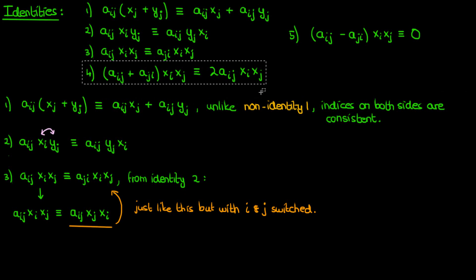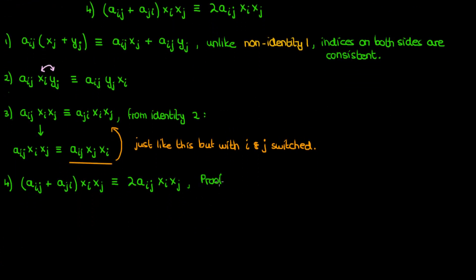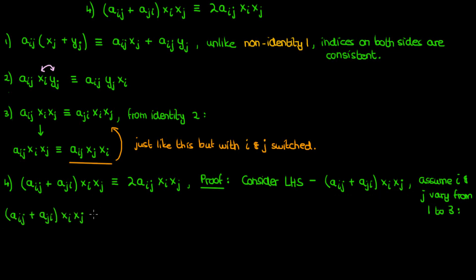The fourth identity states that aij plus aji times xi times xj is identically equal to 2aij times xi times xj. I'm actually going to prove this identity to show that it's true. We'll start with the left hand side. Now if we use the rules of Einstein notation and parentheses that I just spoke about, then you can see that both i and j are dummy indices here. That means that i and j are both being summed over. We'll suppose that they're being summed over from 1 to 3, though you could just as easily show this for another range. 1 to 3 tends to just be the most common range in tensor calculus, so that's why I'm sticking with it.